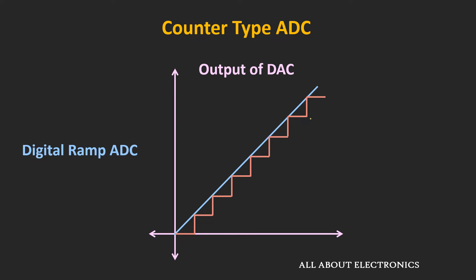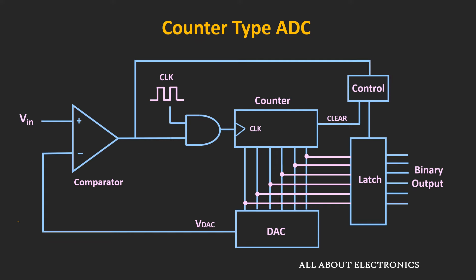Now let's understand the working of this Counter-Type ADC. The input voltage is applied at the non-inverting terminal, while the output of the DAC is given at the inverting terminal of the comparator. And the output of the counter is given as an input to this digital to analog converter.